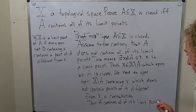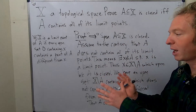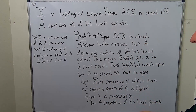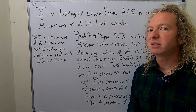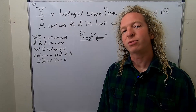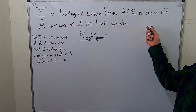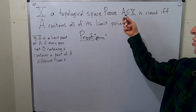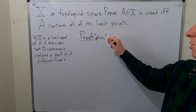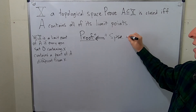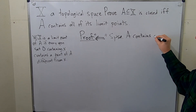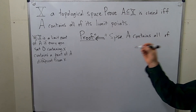When you're learning, it's good to write it all out — it's all about clarity. Let's prove the other direction. To prove the other direction, we're going to assume that A contains all of its limit points, and then show A is closed. This one's a little bit harder. Suppose that A contains all of its limit points.